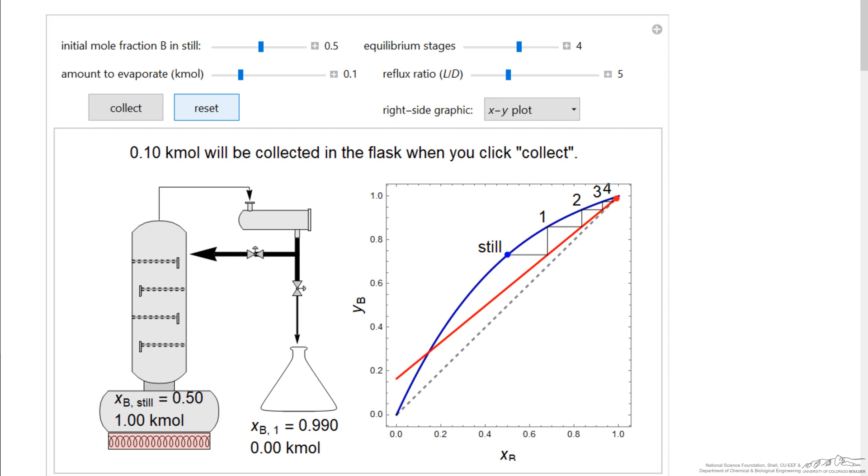And so when we start out, mole fraction of B in the still is 0.5. That's the blue dot in the diagram, the x-y diagram.